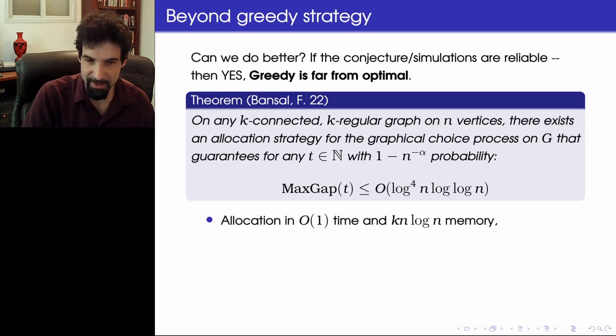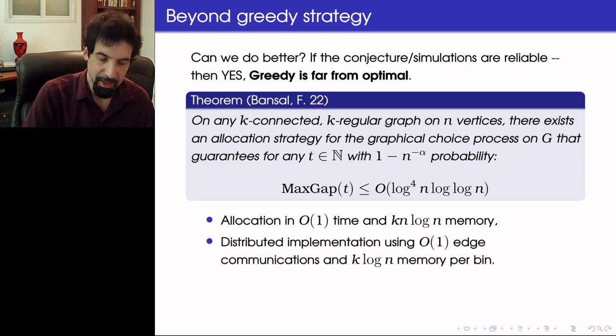The strategy is efficient in several senses, so first it's allocating in O(1) time and requires only kN log N memory. But it can also be distributedly implemented, so although this is a global strategy making complicated considerations and not just allocating by looking on the least loaded bin, it does not require a lot of communication and information about what's happening in the graph, because it can use very stale estimates on the loads of remote vertices. So in fact it could be implemented in a distributed way using O(1) edge communications per allocation and k log N memory per bin.